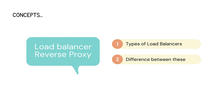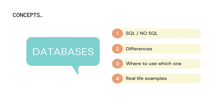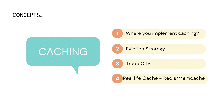Next is load balancers and reverse proxies. You need to understand the different types of load balancers, the difference between a load balancer and a reverse proxy, and where to use each. Next are databases — very very important. You need to understand SQL and NoSQL, the differences between them, which one to use in a certain type of system and why, and you should also look at real-life examples of both.